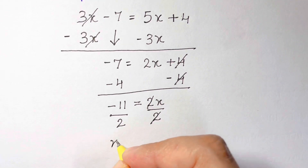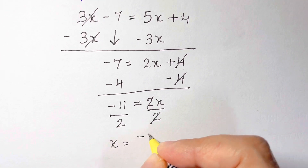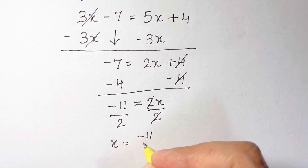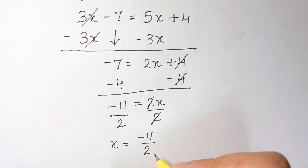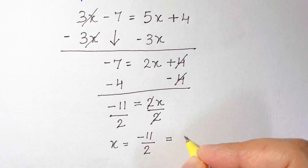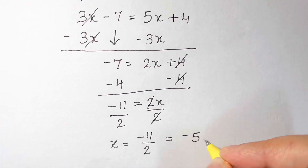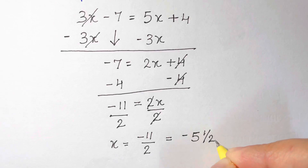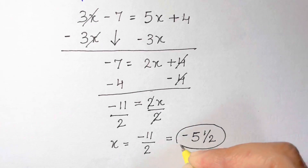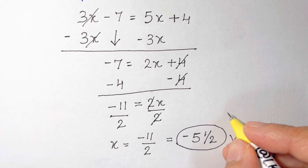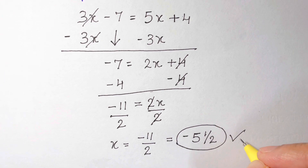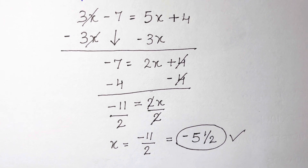Last step: divide by 2 on both sides. I get x equals negative 11 halves, or as a mixed number, negative 5 and a half. This is how you solve linear equations with variables on both sides. Thank you for watching and supporting — always, peace.